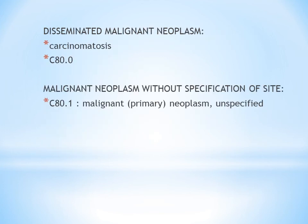Next is disseminated malignant neoplasm. Disseminated means extensively or widely spread. If the condition is disseminated malignant neoplasm — also termed carcinomatosis — you give code C80.0. In this case there is no importance given to whether it is primary or secondary; your code is simply C80.0.